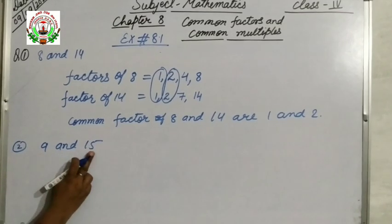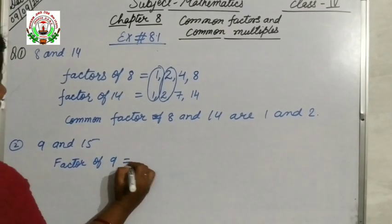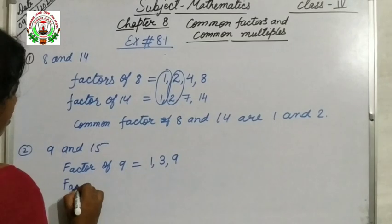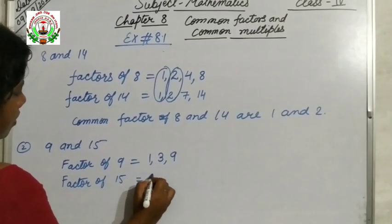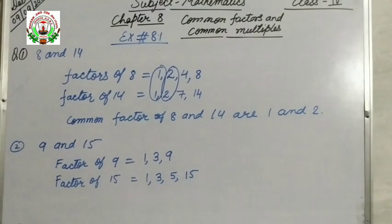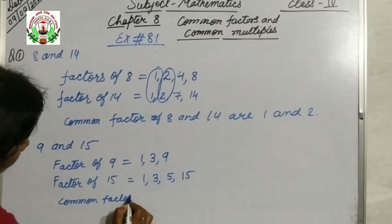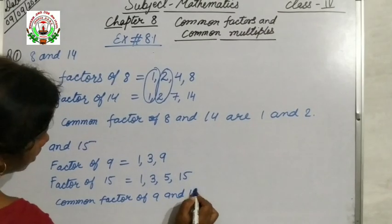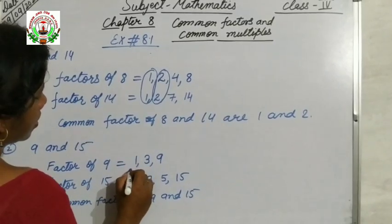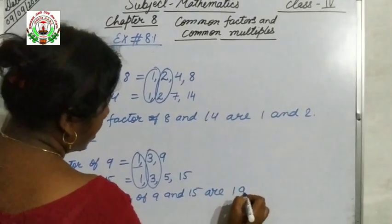First we will write the factors of 9 and then the factors of 15. Factors of 9: 1, then 3 times 3 is 9, and 9 times 1 is 9. Factors of 15: 1, then 3 times 5 is 15, 5 times 3 is 15, and 15 times 1 is 15. Now we will write the common factor of 9 and 15. Which is common in both? 1 and 3. So the common factors of 9 and 15 are 1 and 3.